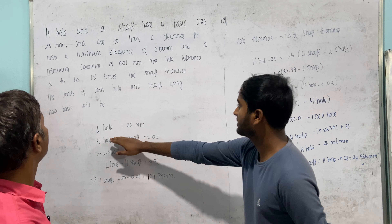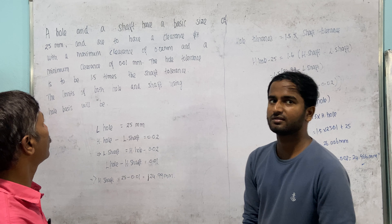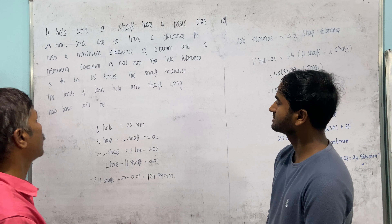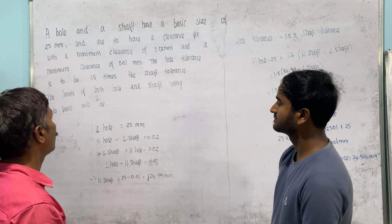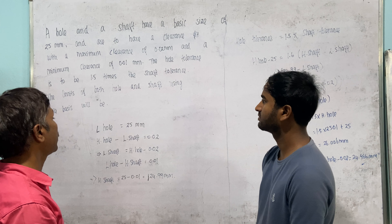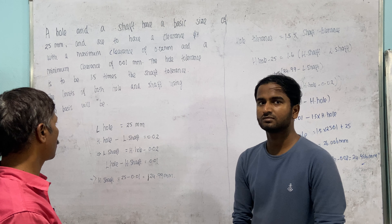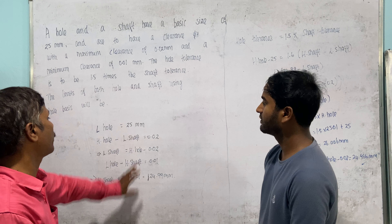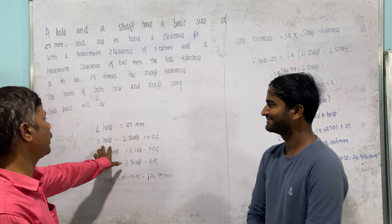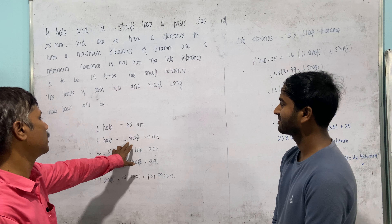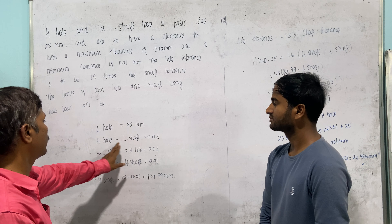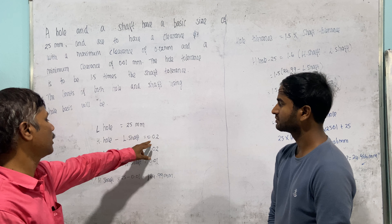The basic size of the hole is 25mm. We use the clearance mode. The maximum clearance is 0.02mm and the minimum clearance is 0.01mm. The hole tolerance is 1.5 times the shaft tolerance. The lower limit is related to the upper limit — the lower limit of the shaft equals the upper limit of the hole minus the maximum clearance of 0.02mm.